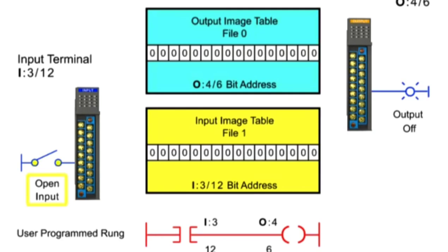When the limit switch is activated, the input module detects a voltage and an ON condition is updated in the input table with a value of 1. During the Execute Program step, the PLC sets the input and output instructions ON.